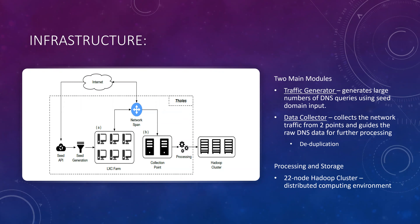The infrastructure of Thales is based on two main areas: the traffic generator, which generates large numbers of DNS queries using the seed domain input, and the data collector, which collects network data from two different points — one from the traffic generator and one from the network and the internet itself. It guides the raw information through processing and finally storage in a 22-node Hadoop cluster.